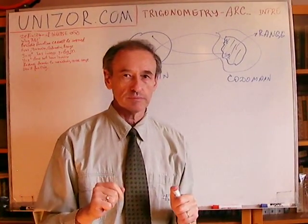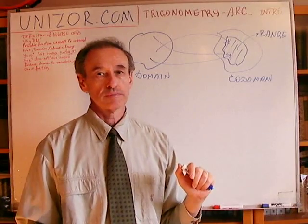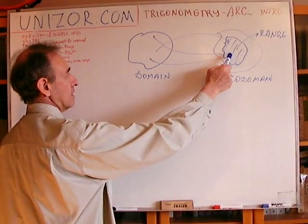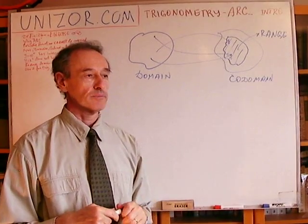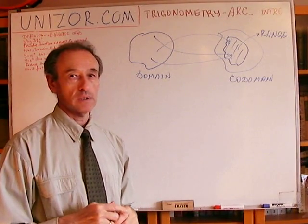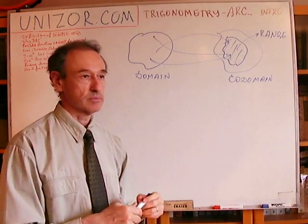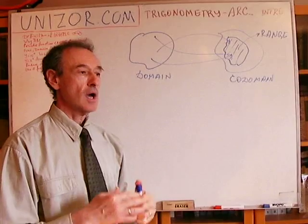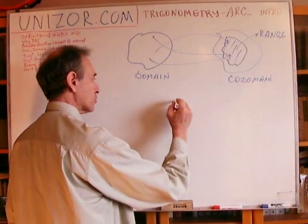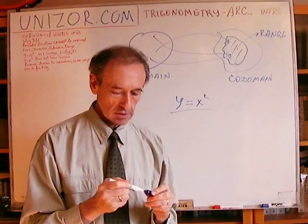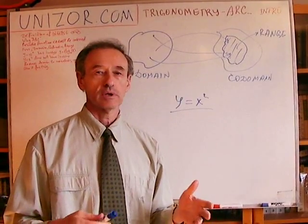Now let's talk about the inverse function. An inverse function allows us to find a prototype if we know the image. But when 2 and minus 2 are both mapped to the same element 4, it's impossible to find the prototype — it could be either 2 or minus 2. This means that in this case there is no inverse function. The function y equals x squared, defined for all real numbers, does not have an inverse function.